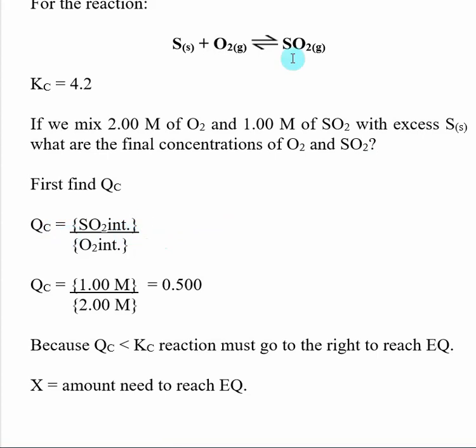So we find our equilibrium expression, so that's products divided by reactants, and remember sulfur is not involved, and then we plug in our initial values for our O2 and SO2. Once we plug them in, we calculate the Q value, which is 0.5.